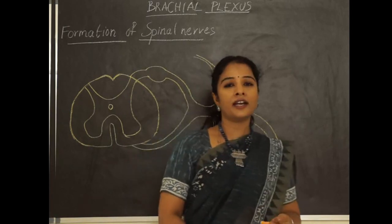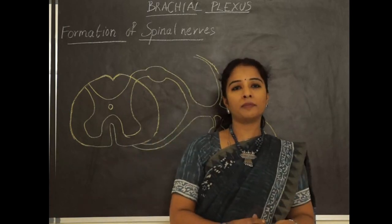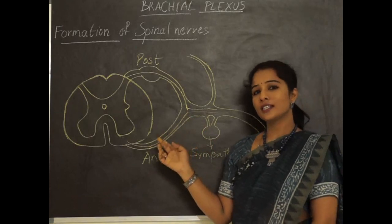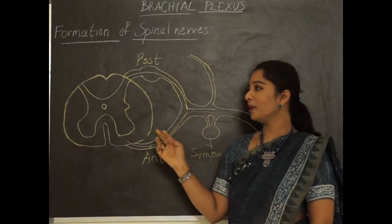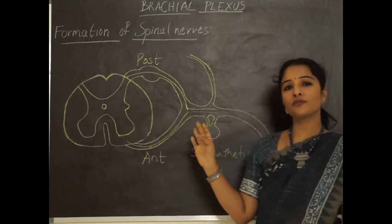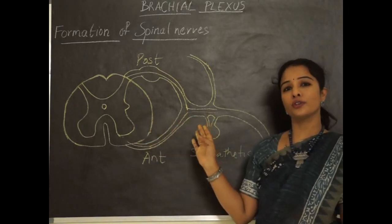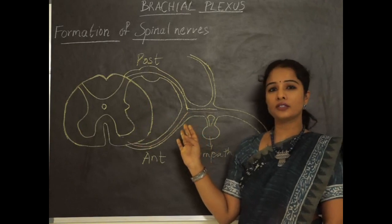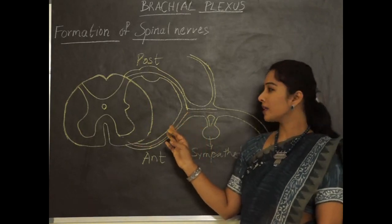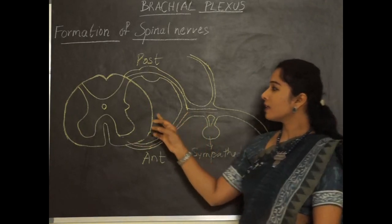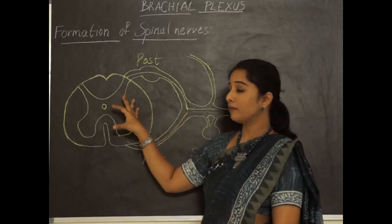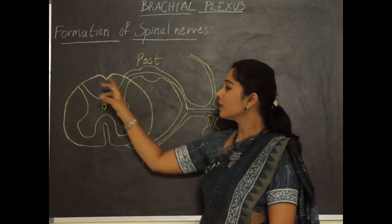Let us start with the anatomy of brachial plexus. To understand the anatomy of brachial plexus, we should know its origin, formation, cords, and branches. The origin of brachial plexus — it gets its origin from the cervical part of the spinal cord.